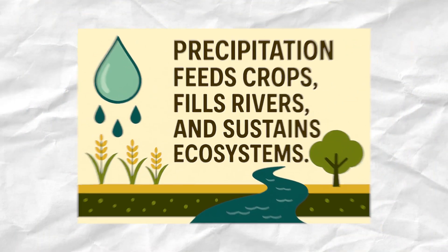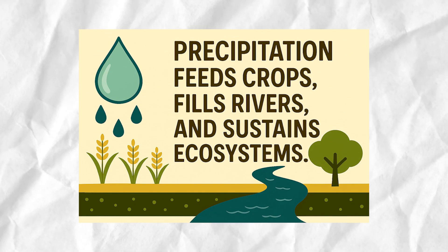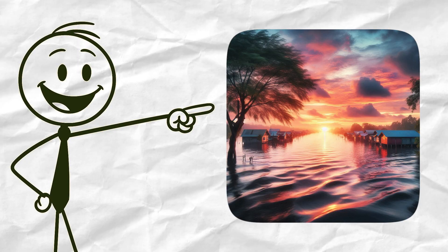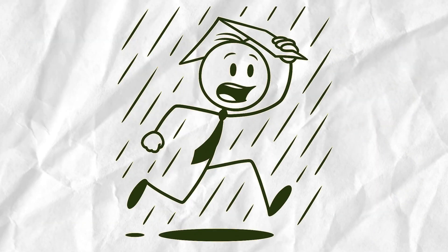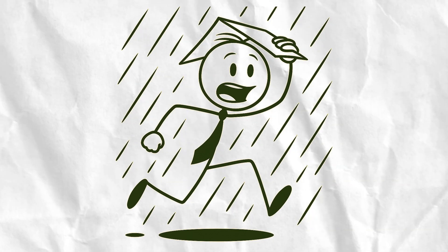This isn't just about weather. Precipitation keeps life on earth going. It feeds crops, fills rivers, and sustains ecosystems. Too much, you get floods. Too little, you get droughts. So, next time it rains, don't just run for cover. Think of the journey.